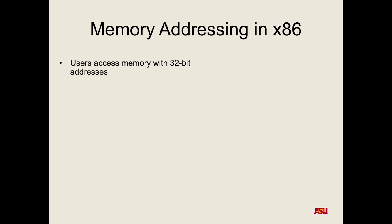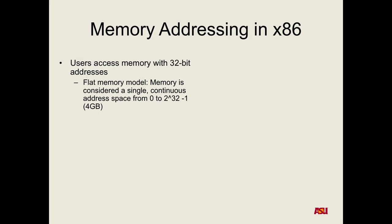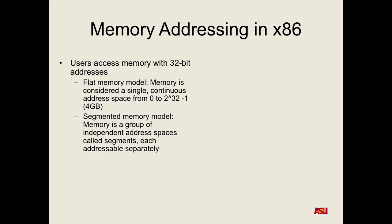In x86 we want to address memory. The main way we think about it is the flat memory model, which gives us zero to 2 to the 32 minus one addresses that we can possibly address. There is also segmented memory where you specify the segment first and then the offset within that segment, which allows you to access more memory than 2 to the 32. The core problem with a 32-bit system: we can only access up to 4 gigabytes of memory.